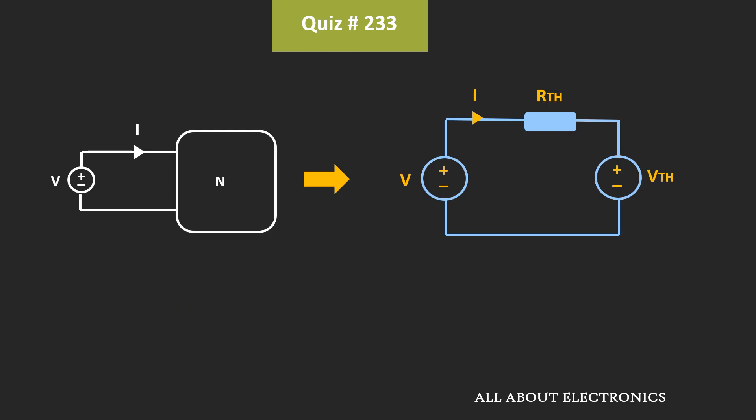So if we replace this network N by the Thevenin's equivalent resistance, then the equivalent network will look like this. So here, V is this external voltage, while Vth and Rth represents the equivalent representation of this network. And here, whenever we apply this voltage V, then the current which is entering this network is equal to I.